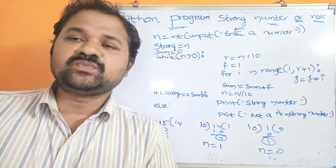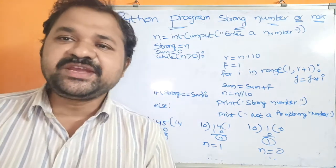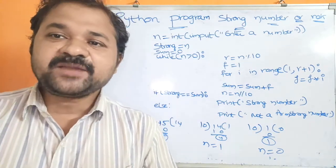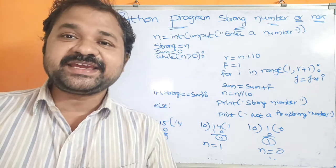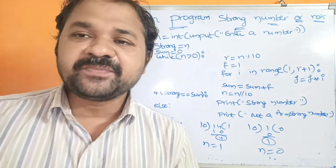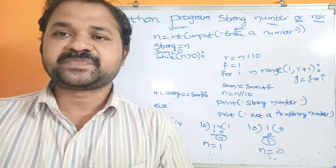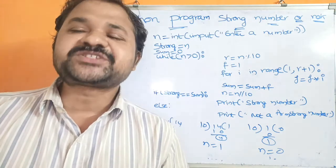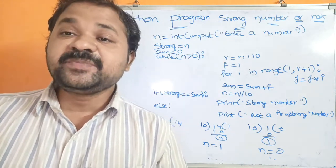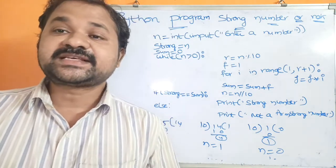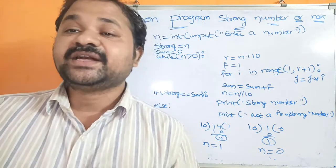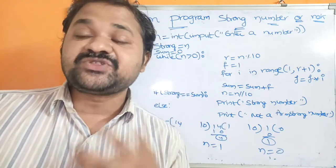In this video we are going to discuss a Python program to check whether a given number is a strong number or not. First let's see what is a strong number. A strong number means the sum of factorials of its digits is equal to the given number.